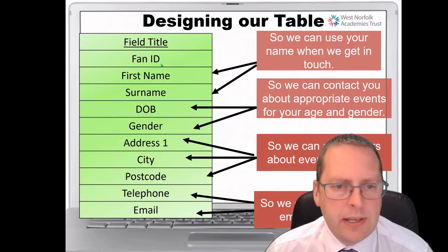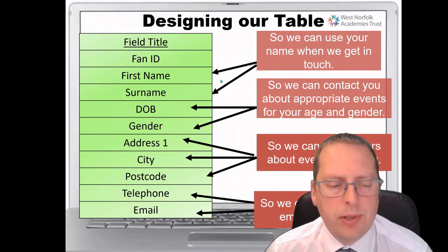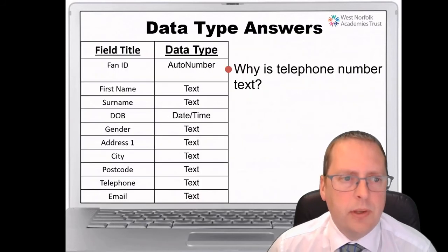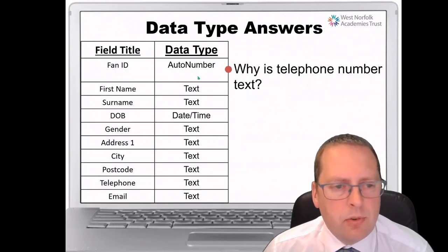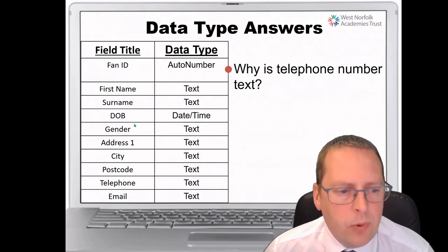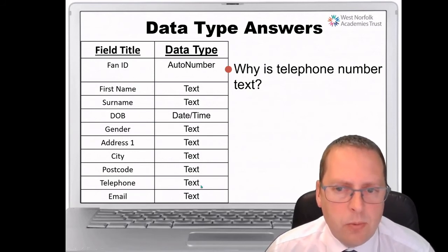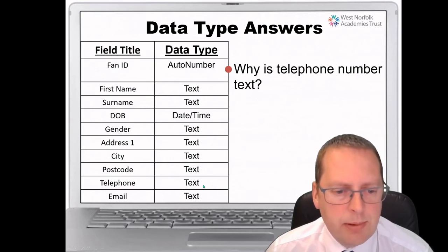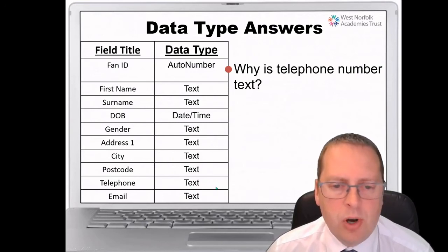Fan ID — what type of field type would this be? First name will probably be text. Surname will be text. Date of birth might be date/time. When it comes to telephone, we tend to use text as the data type rather than number, and there are reasons for that. You can pause the video and write an explanation of why text would be used for telephone number rather than number.